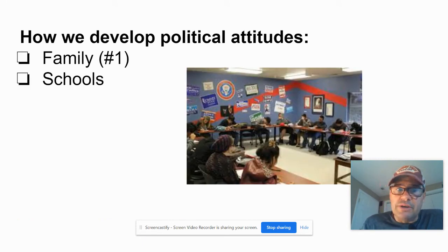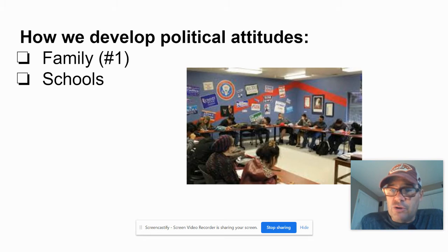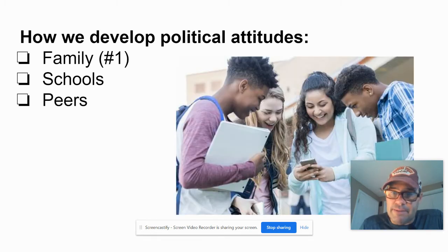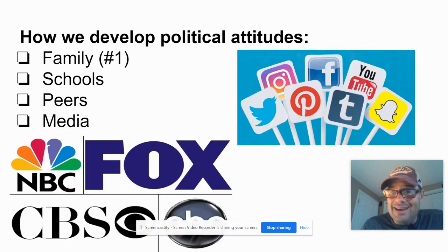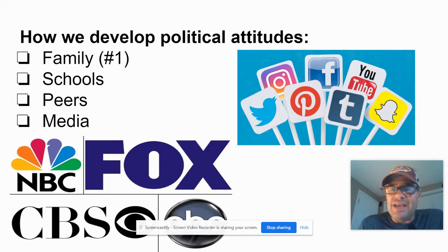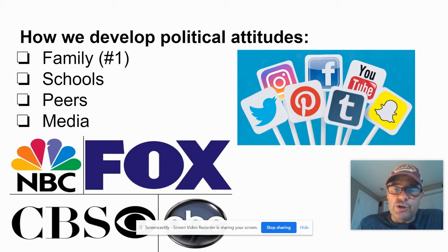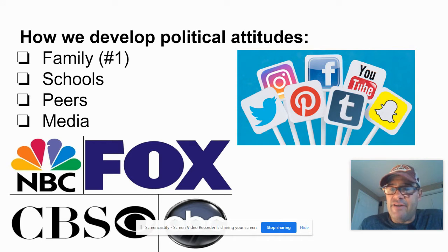Two, schools. Schools impact political attitudes. Of course, that would include teachers, but also peers. In fact, peers get their own separate number here. So: peers, schools, media. Media is a huge influence, and we'll talk about media more in the next unit. Social media is pretty huge — YouTube. And sometimes it's very subtle. You don't even realize you're being politically influenced, but certain news has a bent to it. Certain TV shows and social media have a political bent, and that influences your political opinions.